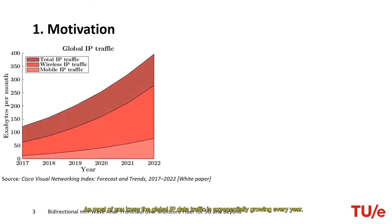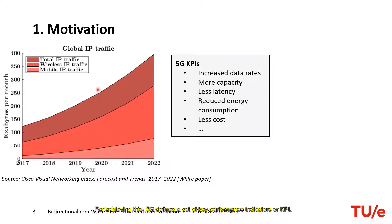As most of you know, the global IP data traffic is exponentially growing every year. This trend can be seen in this graph where wireless and mobile IP traffic are also illustrated as a subgroup of the IP traffic. In order to adapt to the mobile traffic requirements, the current mobile network has to be updated and enhanced. The fifth generation of mobile network, or 5G, aims to fulfill the actual and upcoming mobile traffic requirements. For achieving this, 5G defines a set of key performance indicators, or KPIs.